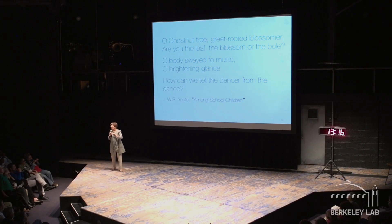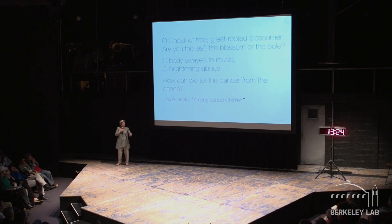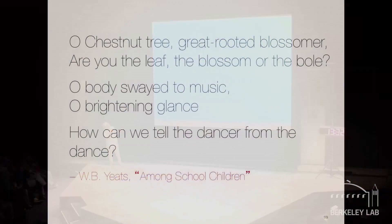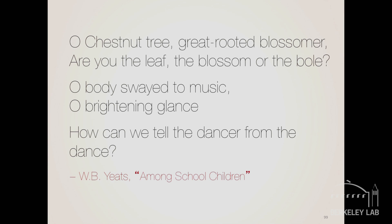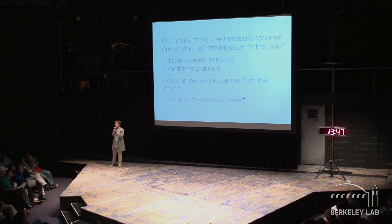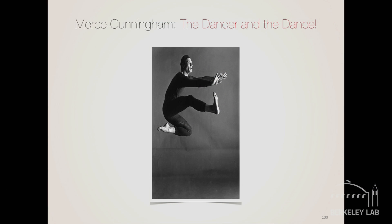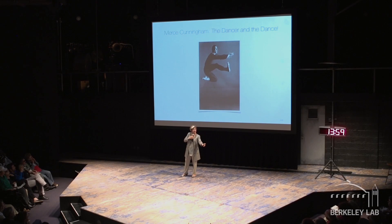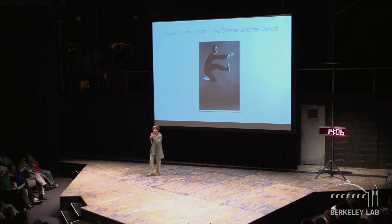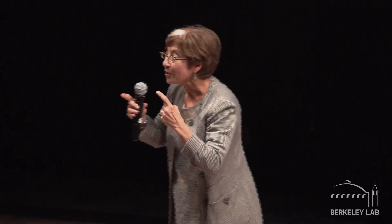I want to finish with a poem I love from Yeats. I always debated whether to be an English major or a chemistry major, but science won. He says: 'How can we tell the dancer from the dance?' Here is Merce Cunningham, with whom I took some lessons. When he is dancing, he is a dancer; when he stops, he is neither a dancer nor do we have a dance. So it is with form and function — so it is with the structure of your nose and your mouth, and why they don't turn into each other.